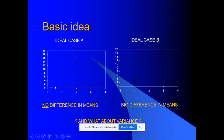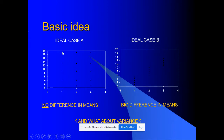Here are pictures that help us understand why analysis of variance is called that, while the main goal is to compare means. On the left side is the ideal case A: different values for the first, second, and third groups — their heights on the vertical axis are all the same. The means for all three groups would be approximately the same, so there is no difference in means. The variance — differences between individual values inside groups — is quite large.